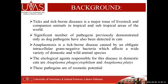Anaplasma causes anaplasmosis in various domestic and wild animal species. In Pakistan, being in a tropical and subtropical area, this disease has been demonstrated in various livestock species, especially cattle, buffalo, horse, sheep, and goats — and recently in zoo animals. This study was the first study conducted on domestic and feral cats in Pakistan.